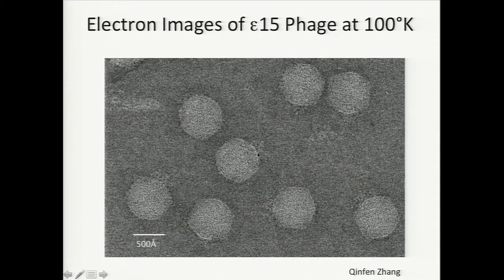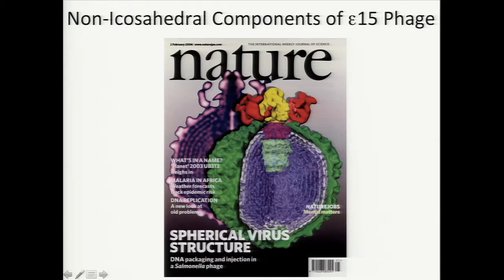Because of that, we developed another algorithm in which we relaxed all symmetry altogether. As a result, we were able to generate a reconstruction not only with the capsid protein but also with additional proteins shown in yellow, red, pink, and green, as well as the contouring of DNA. What I'm showing you is that image processing technology has advanced to the state where we can do a reconstruction not only with high symmetry but also with zero-symmetry components of the virus.